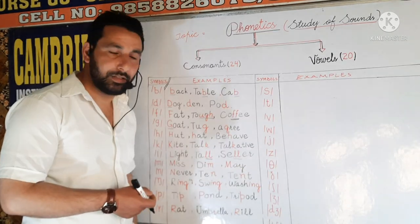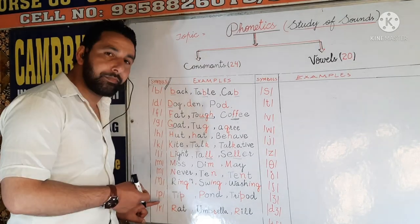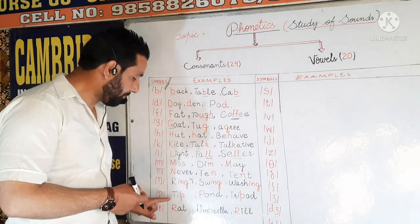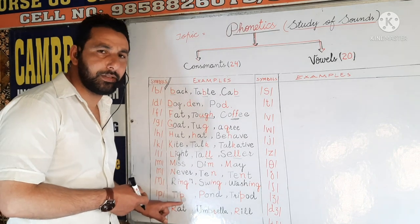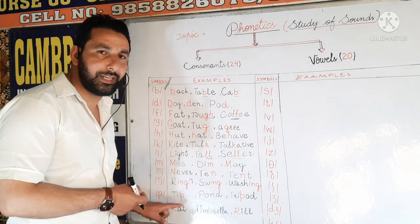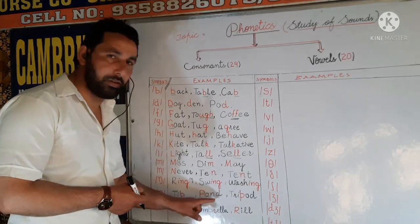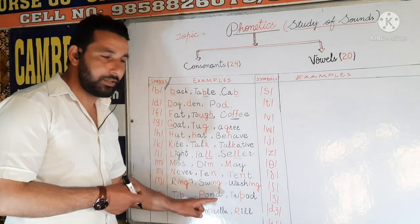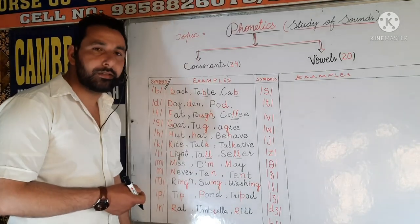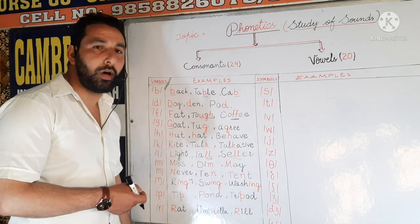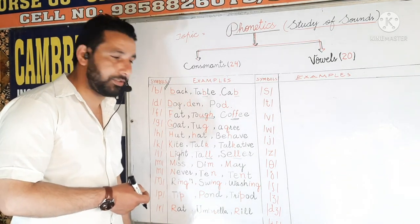Next is the consonant P. For example, 'tip' — we produce the sound P. Next is 'pond' — we produce P. Next is 'tripod' — we produce the sound P.